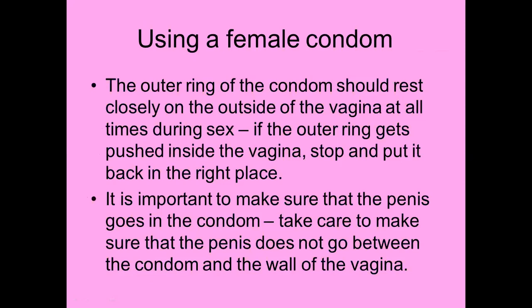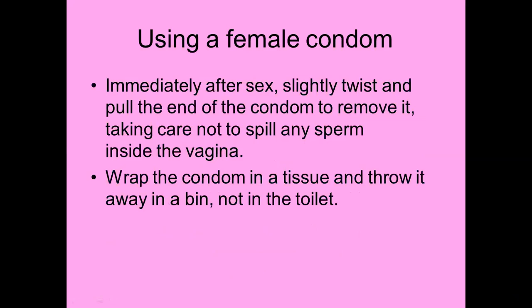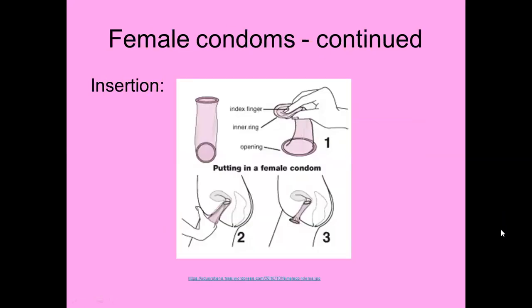The outer ring should rest closely on the outside of the vagina at all times during sex. If it gets pushed inside, stop and put it back in the right place. It is important to make sure the penis goes into the condom and does not go between the condom and the wall of the vagina. Immediately after sex, slightly twist and pull the end of the condom to remove it, taking care not to spill any sperm into the vagina. Wrap in tissue, throw in the bin — not down the toilet. It's possible to keep it in the vagina for a period after sexual intercourse.